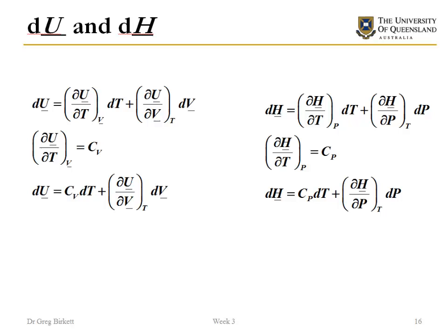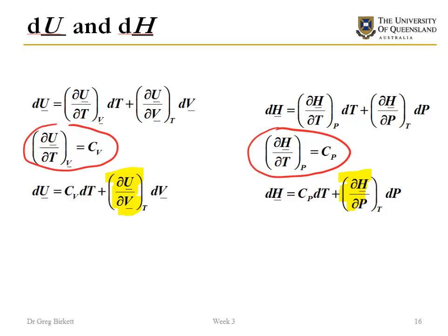Where we left off in the previous lecture was with how we can write total differentials for both internal energy and enthalpy. We see that heat capacity is a useful term in these equations, but we're left with terms we don't have equations for, because we don't have explicit u-equals and h-equals equations to take the partial differential of. So we need strategies for getting these terms out of our equations for dh and du if we want to calculate changes in these variables.